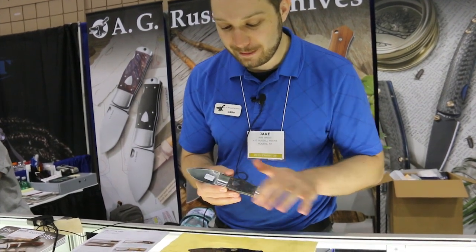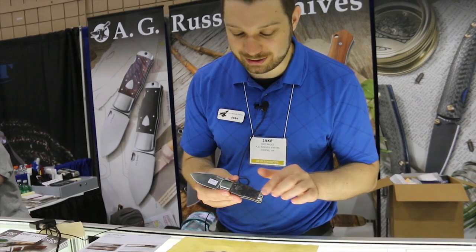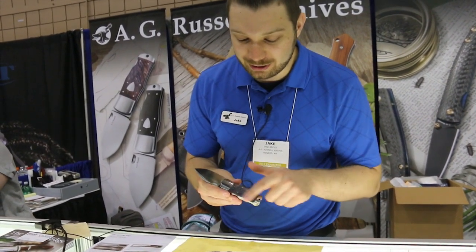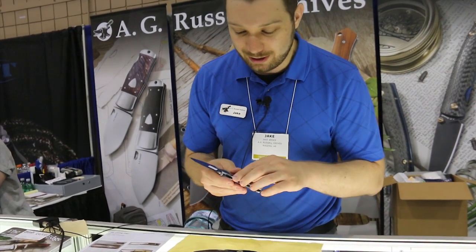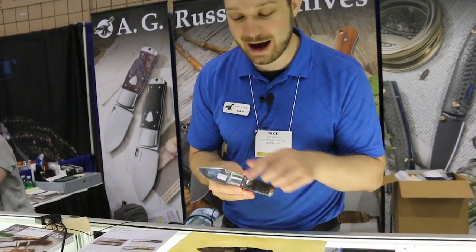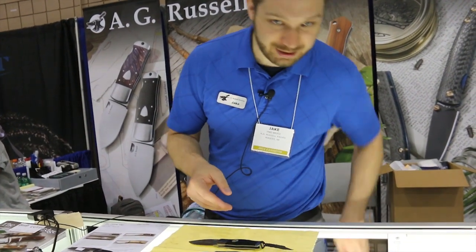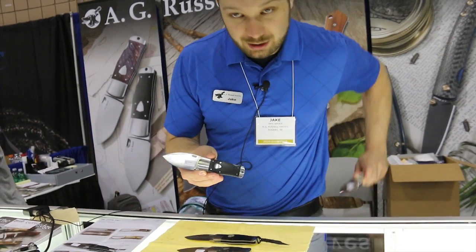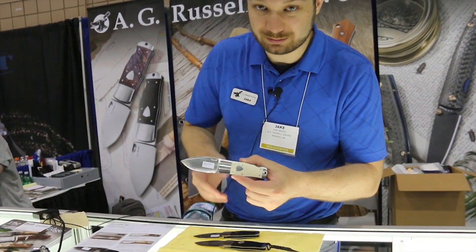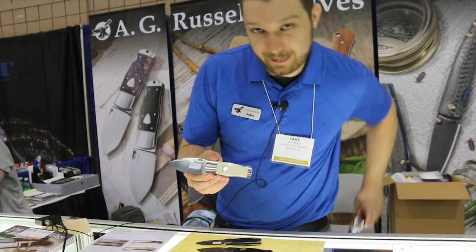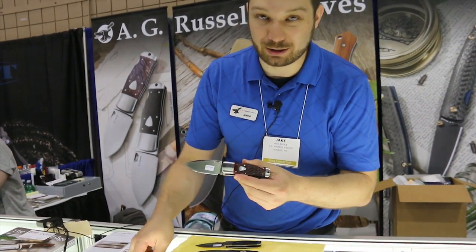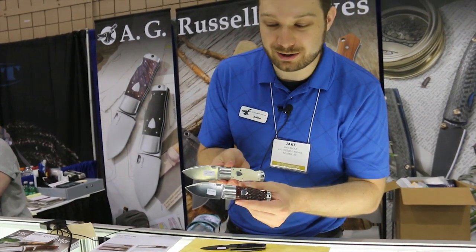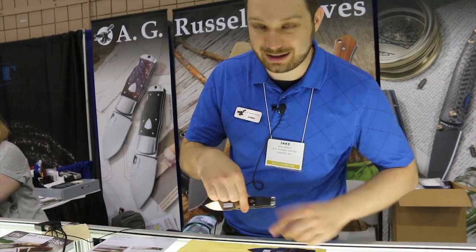This knife right here, we have the blue oak. It is a burled oak that has been stabilized with a blue dye, and you get some very interesting patterns there. That's coming in at $125 retail. But we also have it in black G10, smooth white bone, and a nice jigged bone. Both bones are coming in at $100, and the black G10 is at $95.